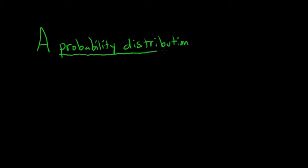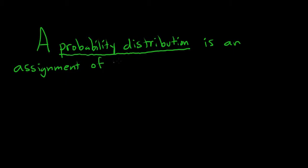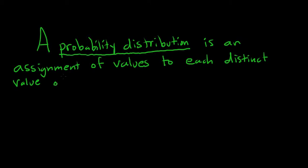A probability distribution is an assignment of probabilities to each distinct value of a discrete random variable. So we're basically taking a random variable and assigning probabilities to it.